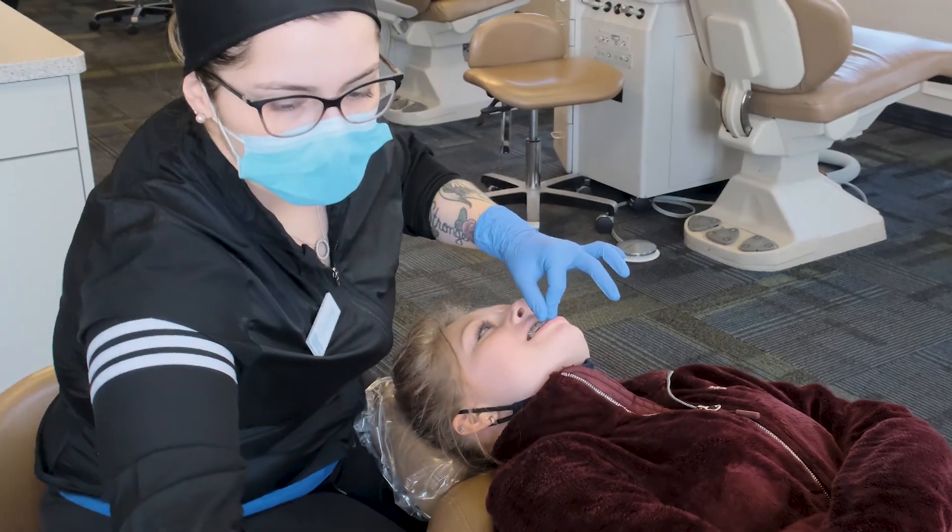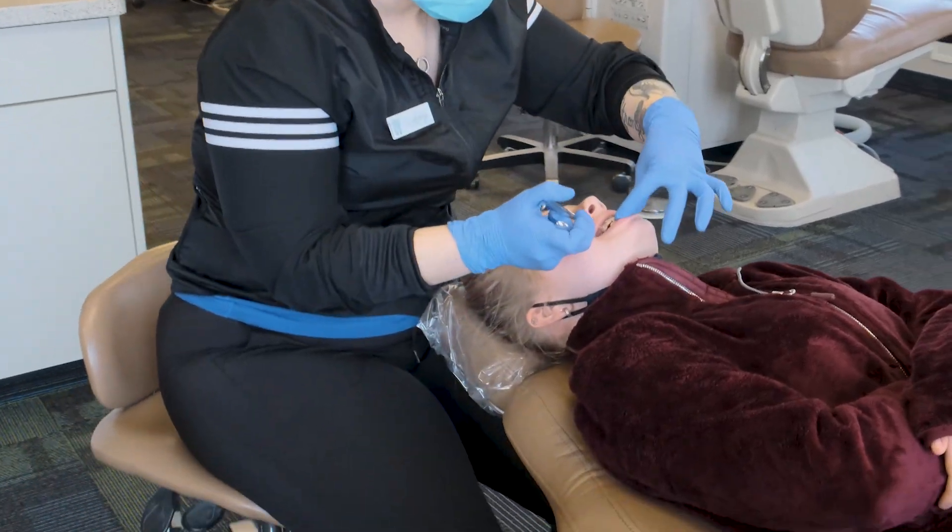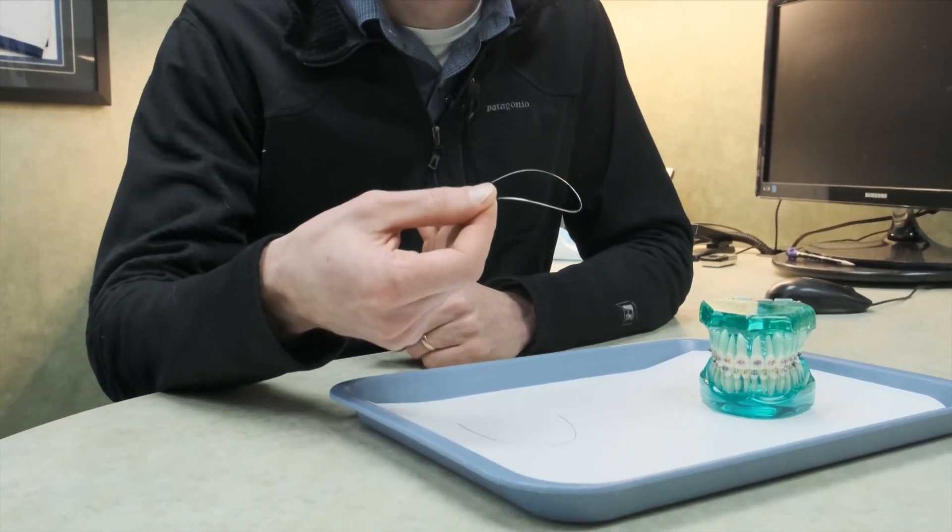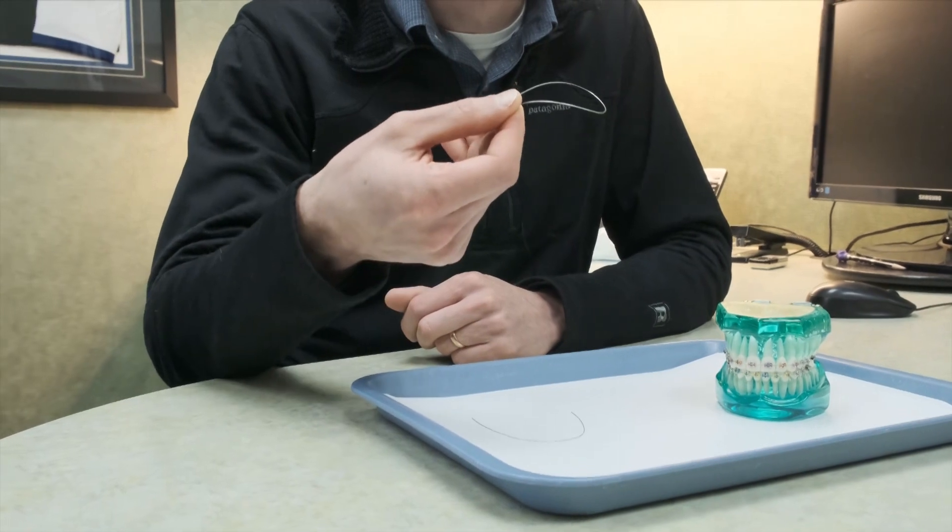Depending on what we're trying to do with treatment, we can put different wires in. This is called a reverse curve wire, and you can see that it's not flat.